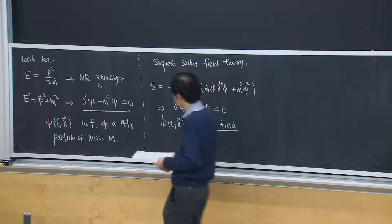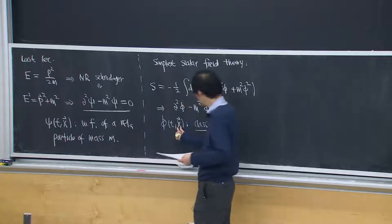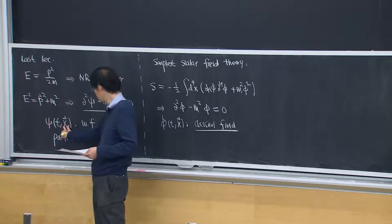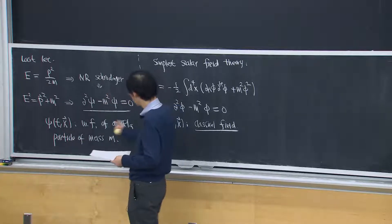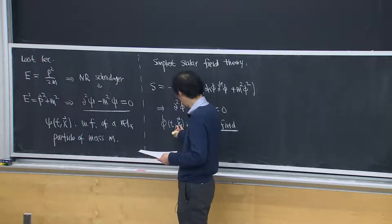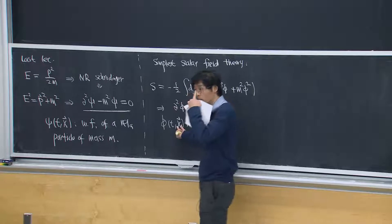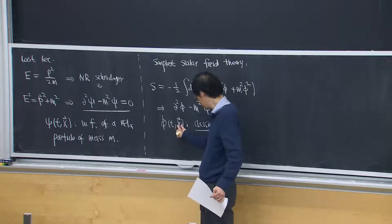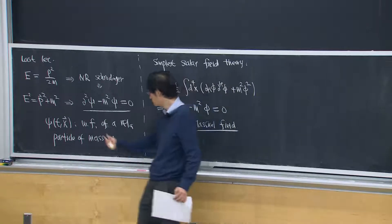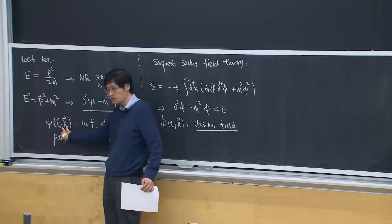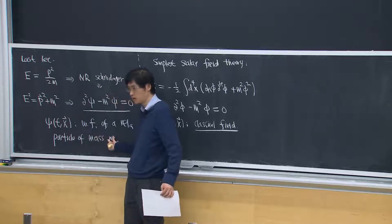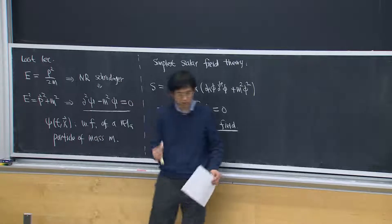Even though the equations look identical, the physical interpretation is very different. In the wave function case, x is the eigenvalue of the position operator for the relativistic particle. In the classical field case, x is just a label for the location in space where the field is defined. So phi and psi have completely different physical interpretations.